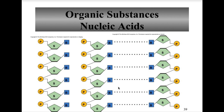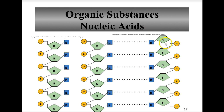Polymers of nucleic acids are formed by bonding between the sugar of one nucleotide and the phosphate group of the next, creating a sugar-phosphate backbone — alternating sugar, phosphate, then a base. In the DNA molecule, the two strands interact through hydrogen bonding between nitrogenous bases, holding the two chains together.